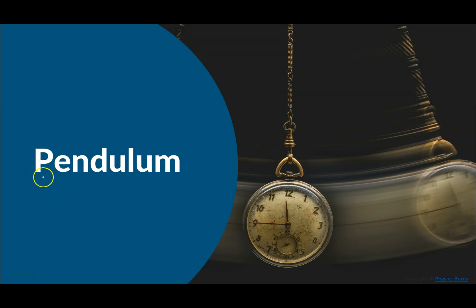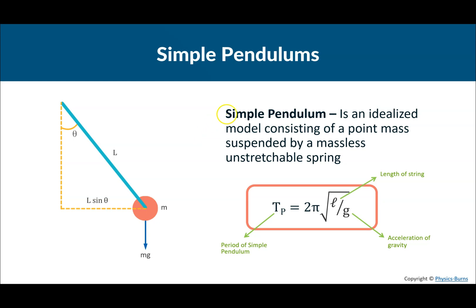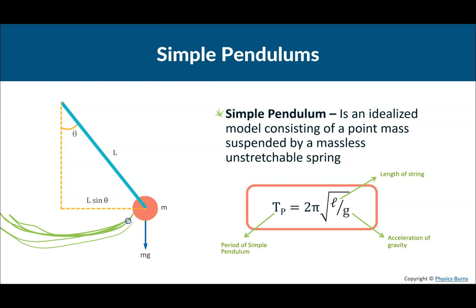Welcome back to Simple Harmonic Motion. Today we are finally talking about something other than springs — pendulums, and more specifically simple pendulums. A simple pendulum is an idealized model consisting of a point mass suspended by a massless, unstretchable string. We're not talking about weird shapes or rubber bands, just everything as ideal as possible. Pendulums swing back and forth, having this oscillation — this simple harmonic motion.